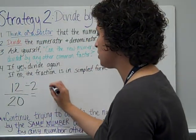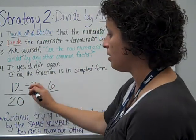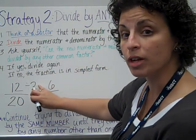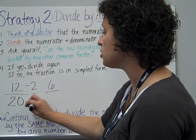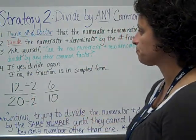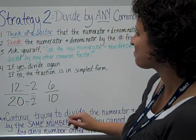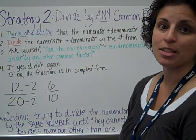If I do 12 divided by 2, that gets me to 6. And if you divide by 2 on the, or in the numerator, you have to divide the denominator by 2 as well, which would get me down to 20, or sorry, 10.